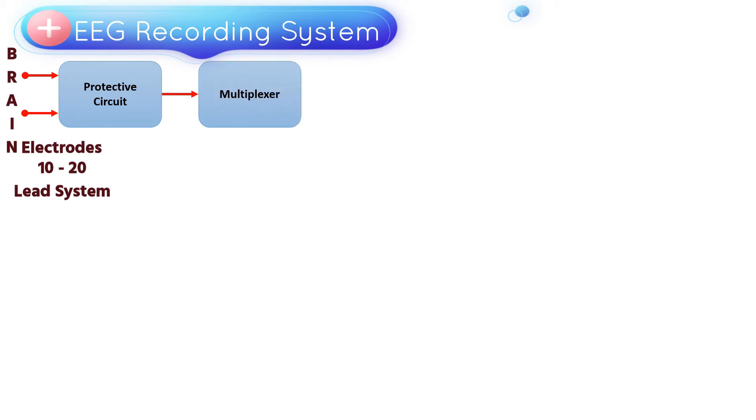Multiplexer. Since we have more number of electrodes and all the bioelectric signals generated has to be processed one by one, we use a multiplexer circuit to permit transfer of one signal from an electrode at a time.